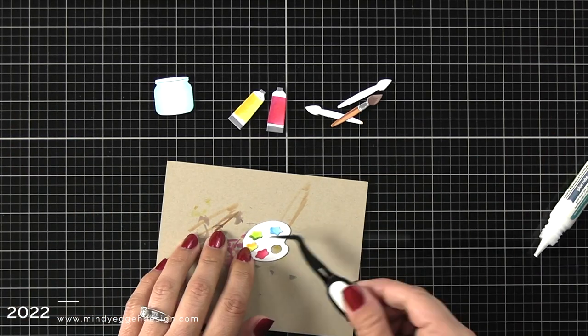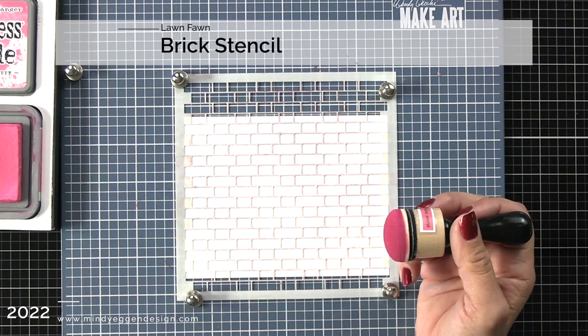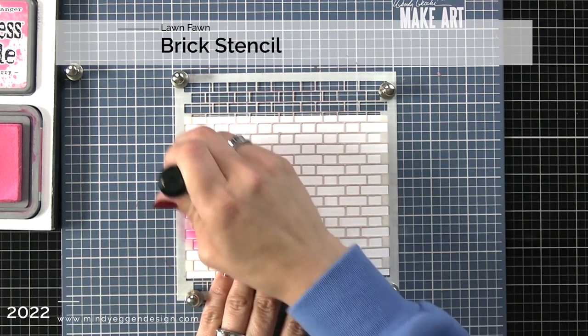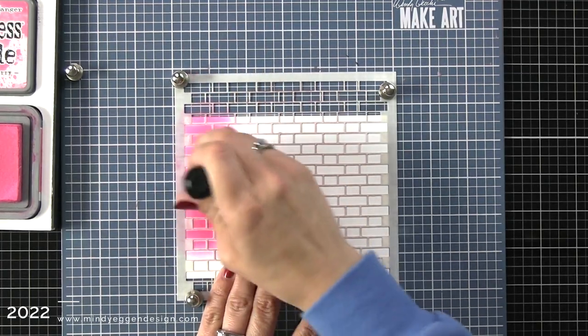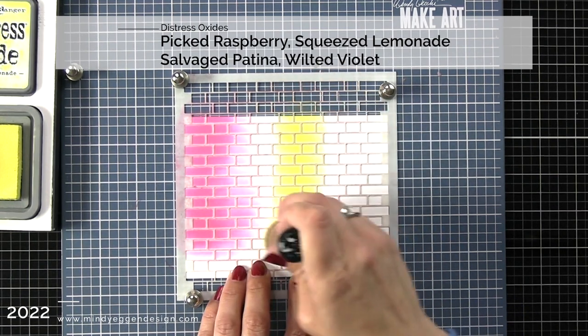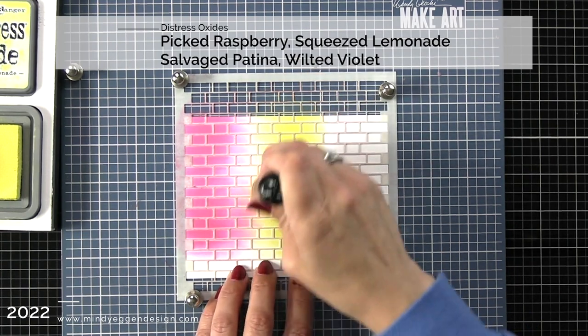Now I have all these put together, I'm going to set them off to the side to work on my background, and here is that brick stencil. This one you see is actually the Lawn Fawn brick stencil, so I did grab the right one here for the video. I'm holding that down over some 80 pound white cardstock on my make art station, using my magnets, and I am ink blending on picked raspberry, squeezed lemonade, salvaged patina, and wilted violet.